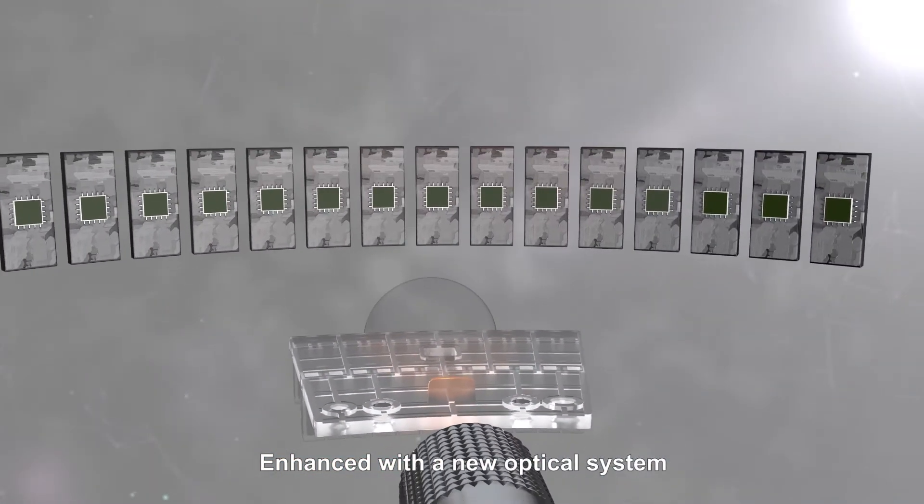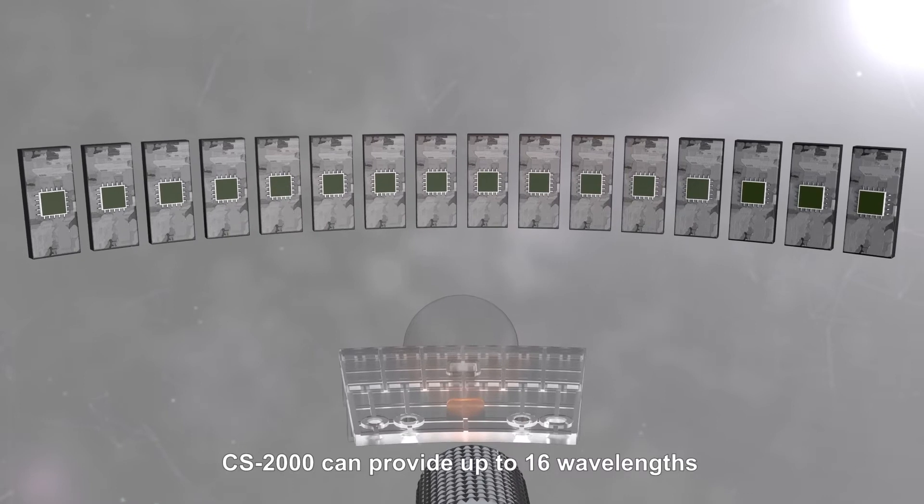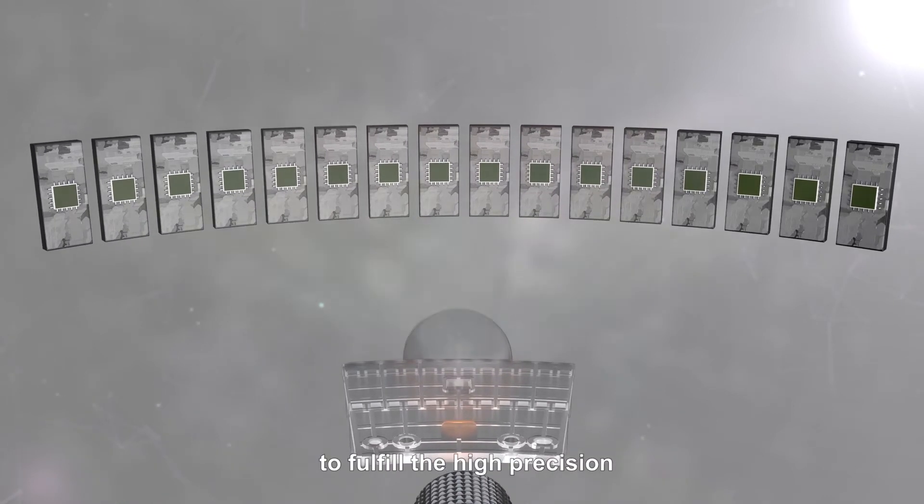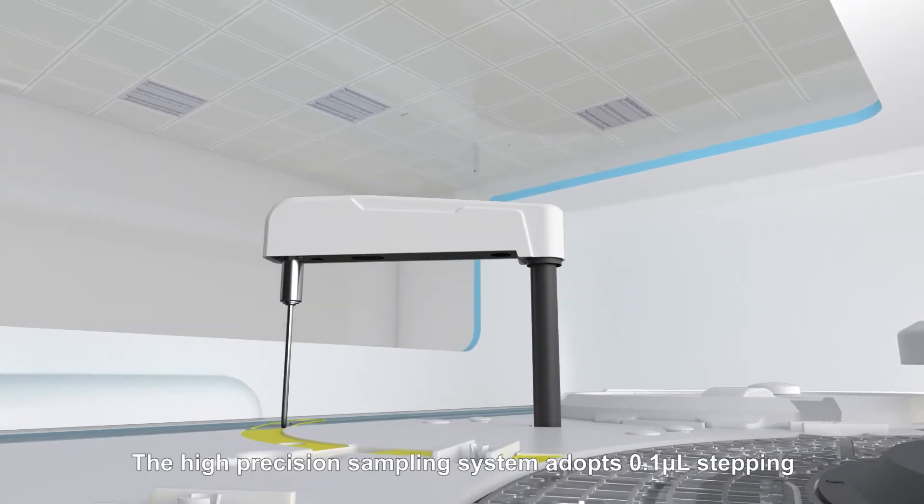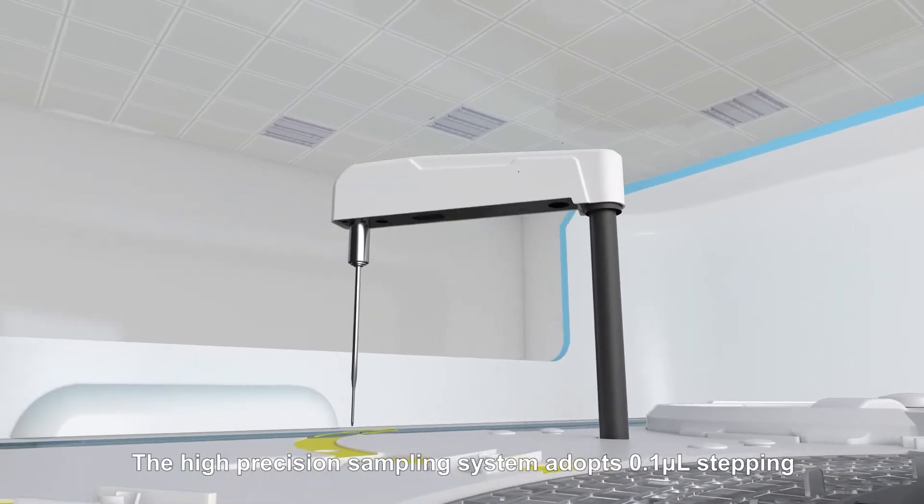Enhanced with the new optical system, CS2000 can provide up to 16 wavelengths to fulfill the high precision. The high-precision sampling system adopts 0.1 microlitre stepping.